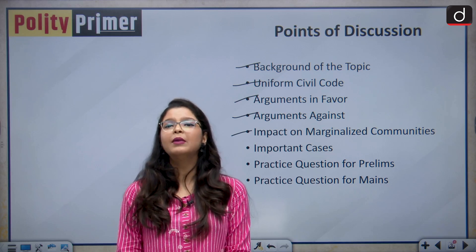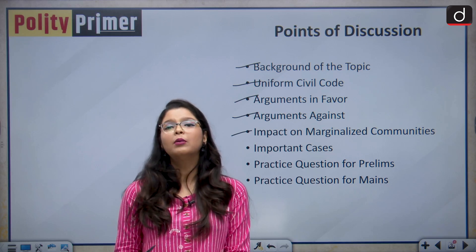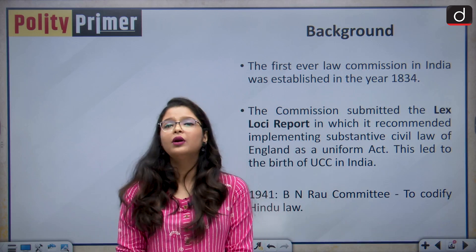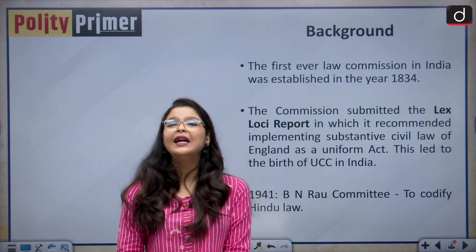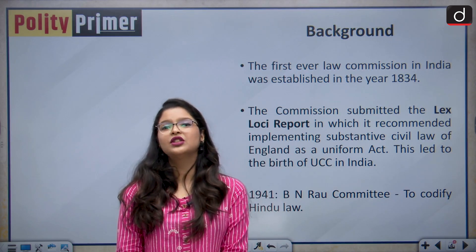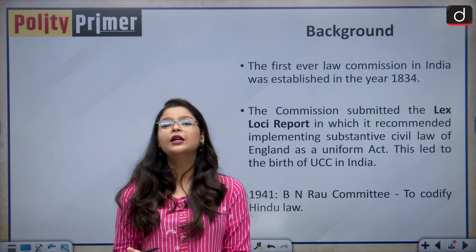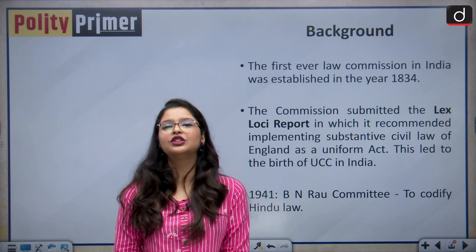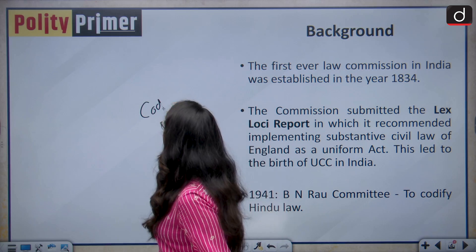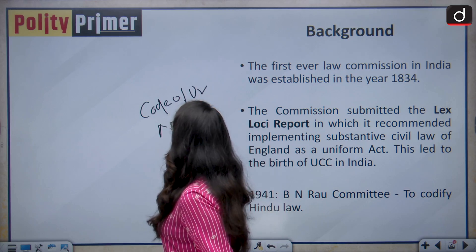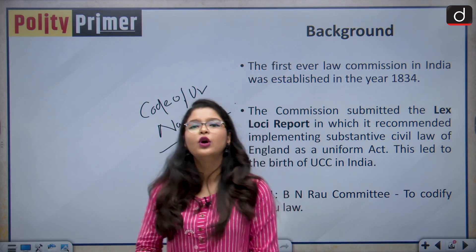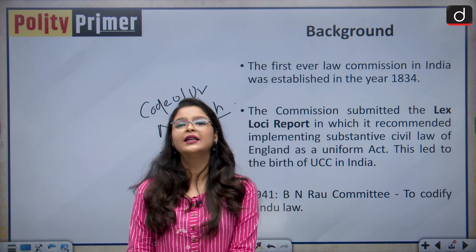Let us delve into the background of the Uniform Civil Code and talk about how it came to India. If we talk about the historical background of the Uniform Civil Code, let me take you back to the Roman civilization. All of the Romans were governed by equal civil laws irrespective of their religion. The Mesopotamian people also followed the Code of Ur-Nammu, and this Code of Ur-Nammu talked about treating citizens as one equal family.